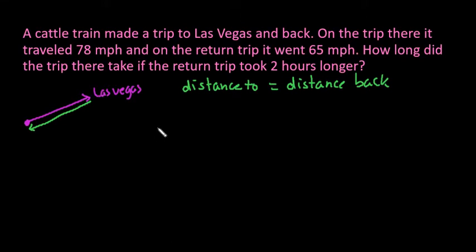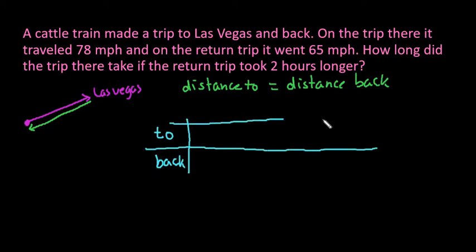So we're going to look at to and then back, or there and then back, whichever way you want to think about it. So we would set up our little table. We would have our rate, and we would have our time, and then we would have our distance, which is equal to the rate times the time.